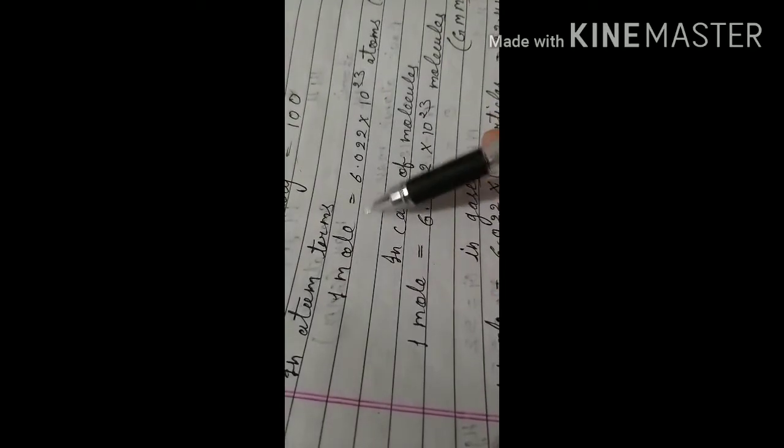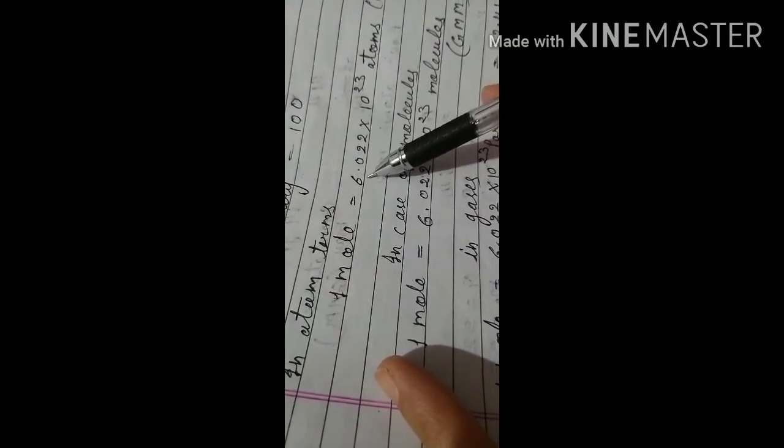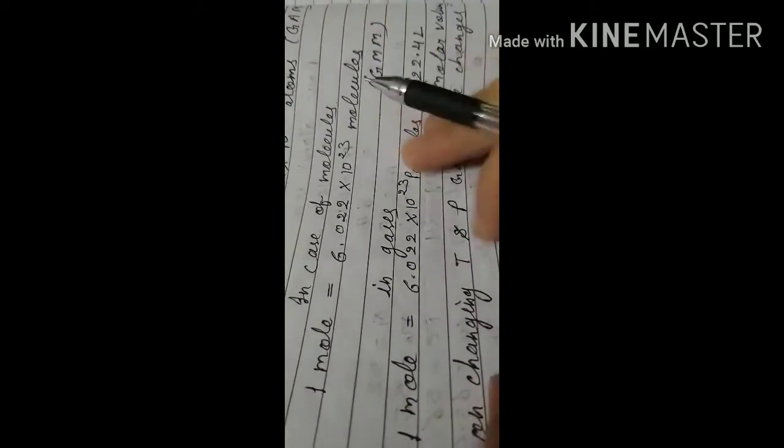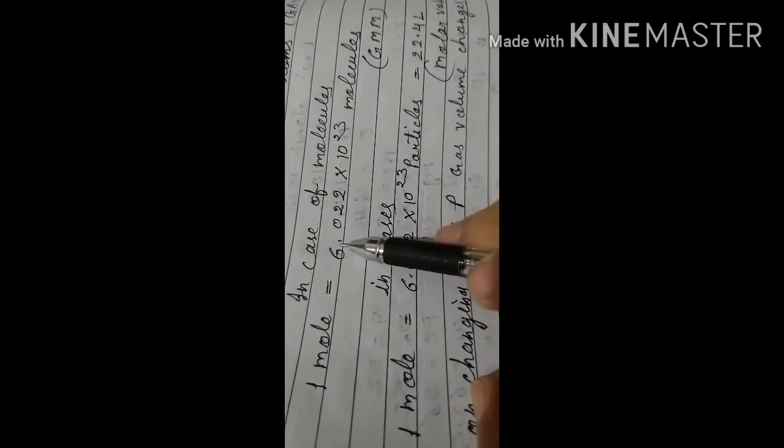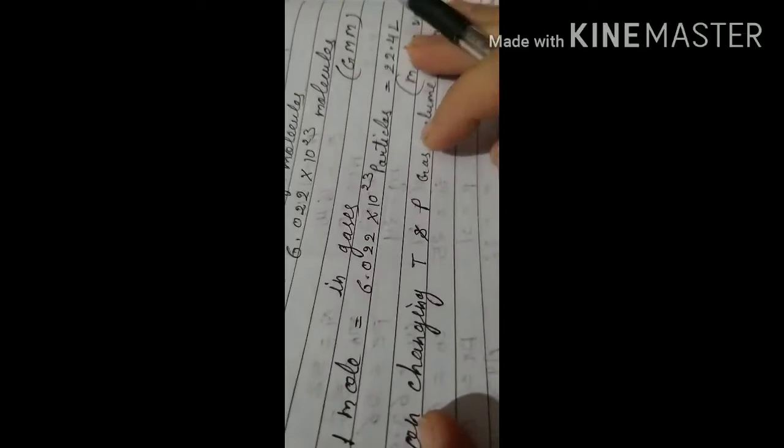In terms of atoms: one mole contains atoms equal to Avogadro's number. In terms of molecules: one mole equals molecules equal to Avogadro's number. For gases: one mole equals 6.022 × 10²³ particles, and at standard conditions its volume is 22.4 liters. On changing temperature and pressure, the gas volume also changes.